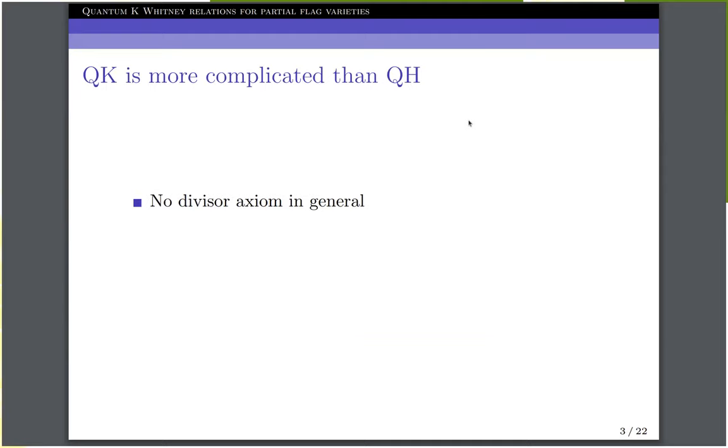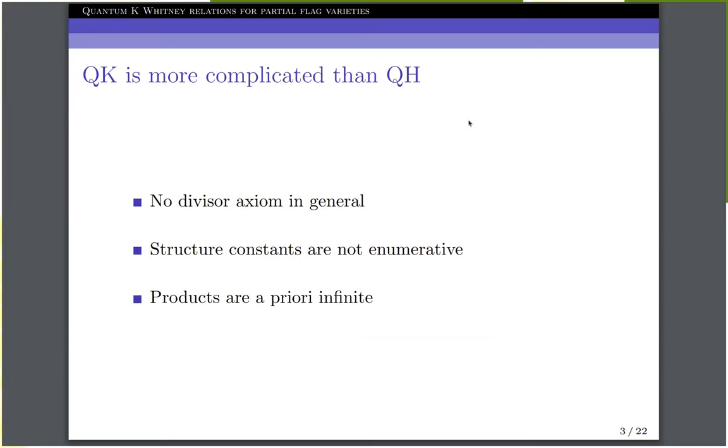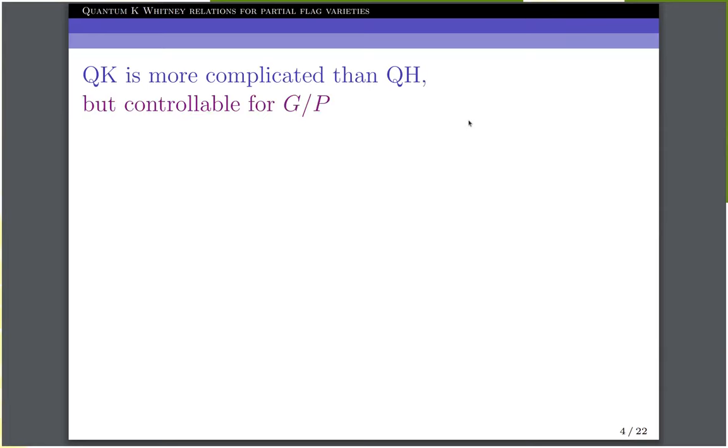In case you are more familiar with quantum cohomology, I'd like to point out that quantum K-theory is more complicated in several ways. First of all, there is no divisor axiom to help us compute K-theoretic Gromov-Witten invariants. Moreover, the structure constants in quantum K-theory are no longer a single K-theoretic Gromov-Witten invariant, and they are not enumerative in general. And finally, when you multiply two K-theory classes in quantum K-theory and expand in your K-theory basis, a priori the coefficients are going to be formal power series in Q rather than polynomials.